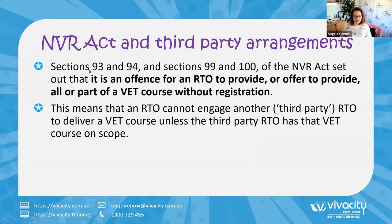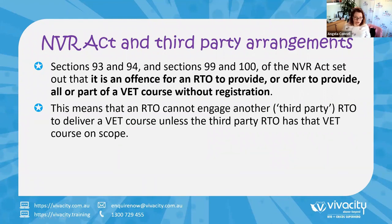Under sections 93 and 94, and sections 99 and 100 of the NVR Act, it sets out that it is an offence for an RTO to provide or offer to provide all or part of a VET course without registration. This means if you are working with an RTO, one partner has to be an RTO. An RTO cannot engage another third party RTO to deliver a VET course unless the third party RTO has the VET course on their scope.